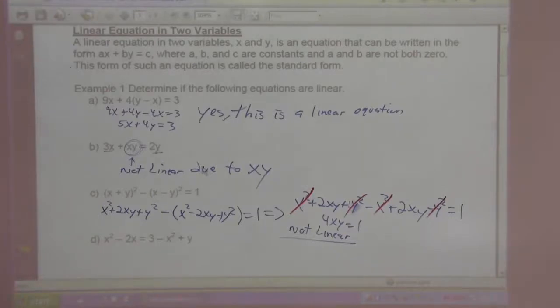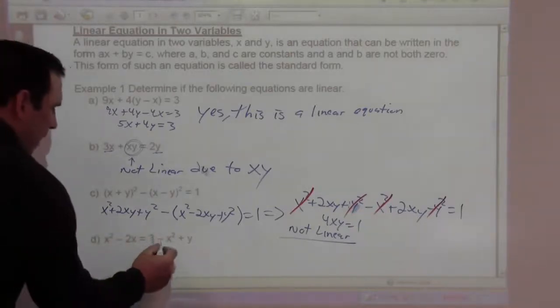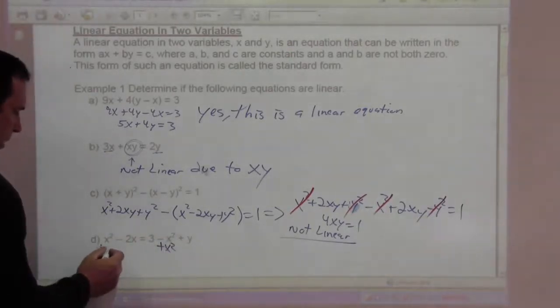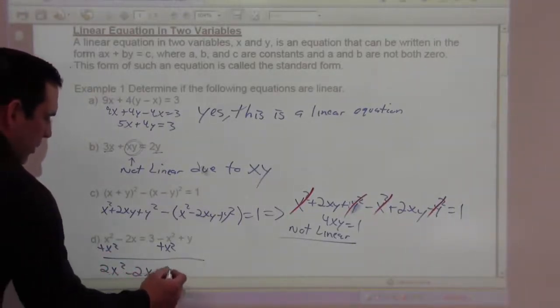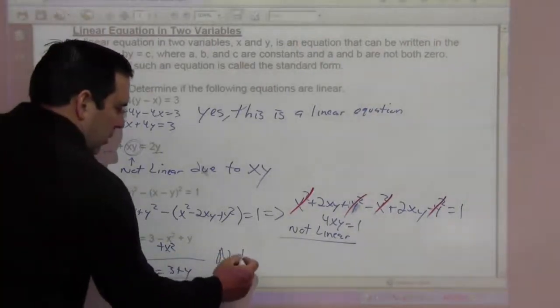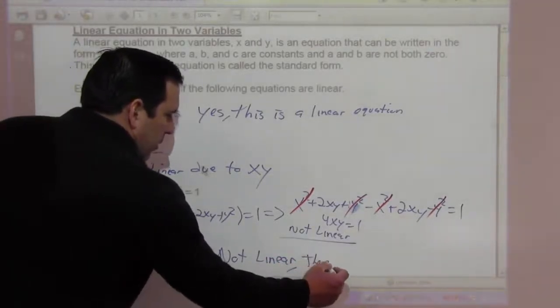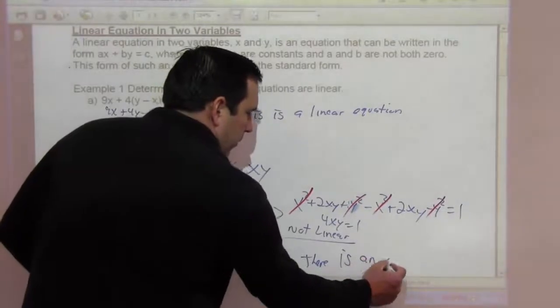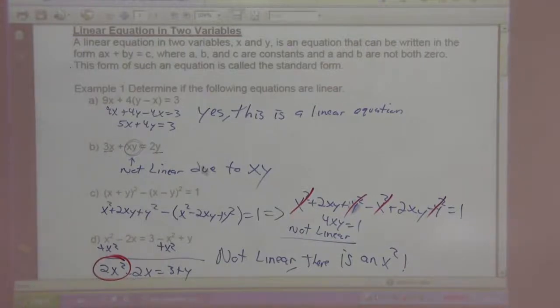Now the next one, x² - 2x = 3 - x² + y. I can add x² to both sides and we have 2x² - 2x = 3 + y. So because of this x² alone, this is not going to be linear.